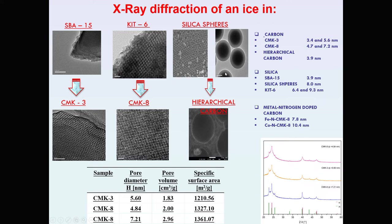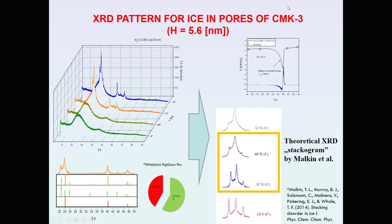We performed X-ray diffraction experiments for water inside different porous matrices: silica matrices like SBA15, KIT6, and silica spheres with different pore sizes, and also carbon matrices like CMK3, CMK8, and hierarchical carbon with different pore sizes. We find that the structure of ice in each pore is quite different.